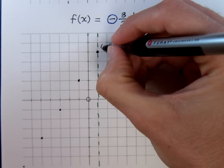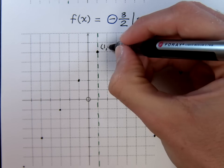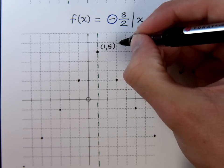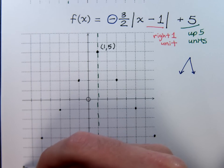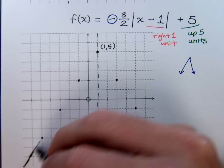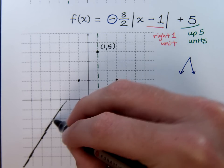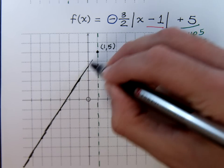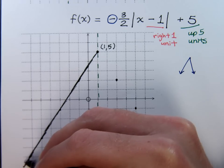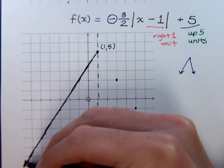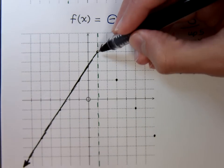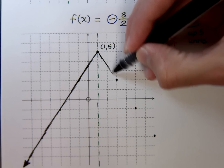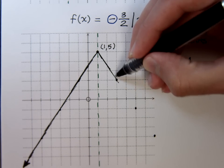Our vertex here is positive one, positive five, and now we just need to draw our absolute value function. Now absolute value functions are quite nice because you can use a straight edge to get these two different sides of the absolute value.